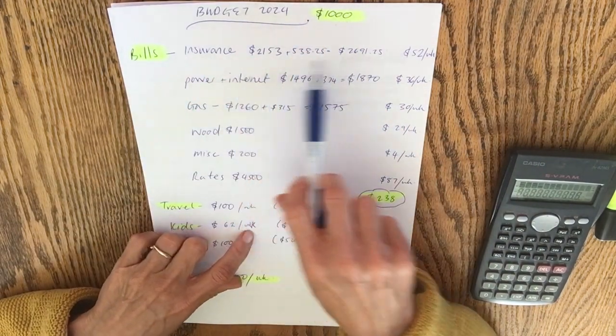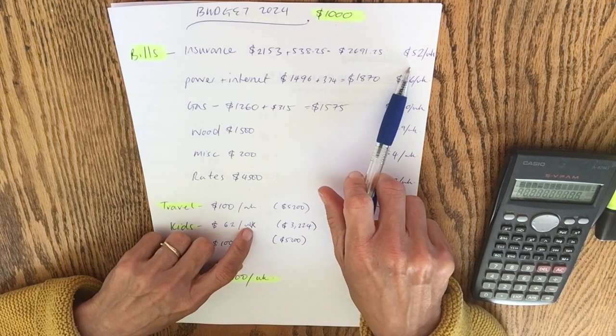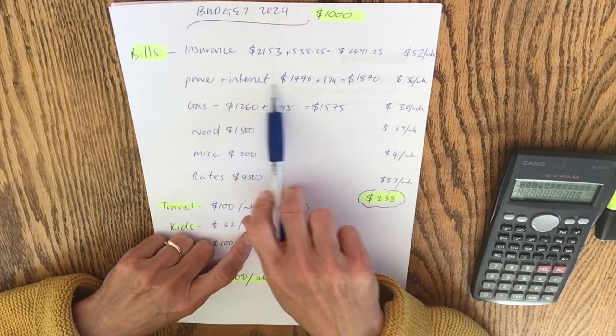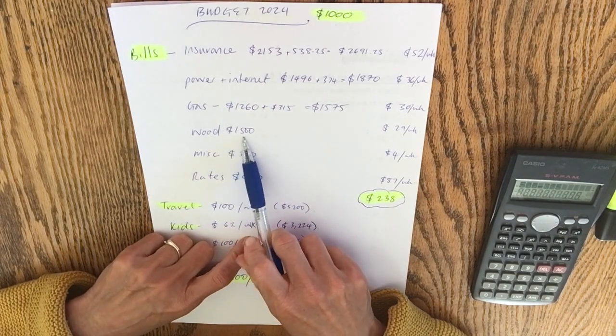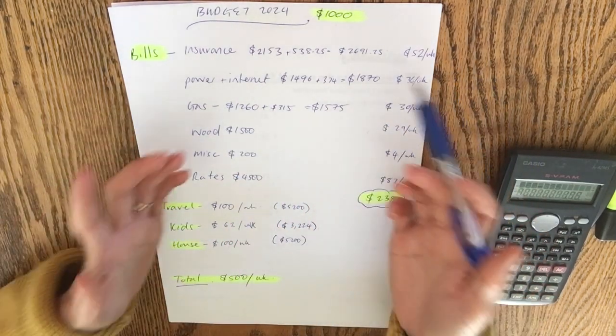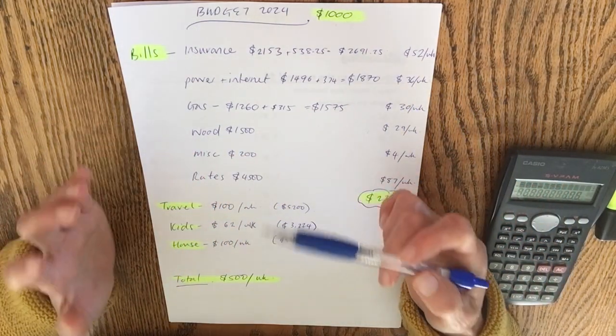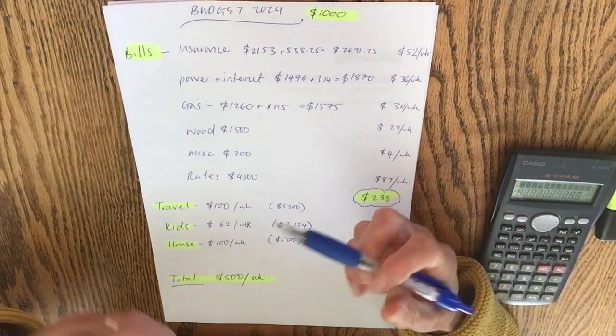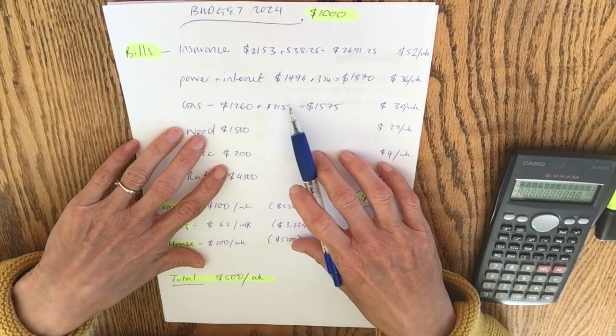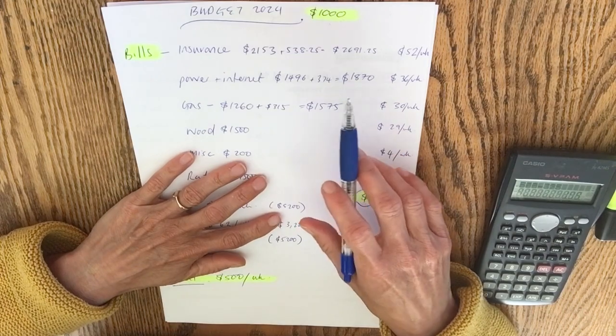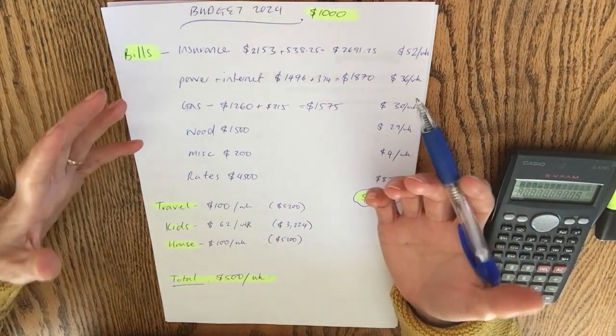So it's working for us and we're not left scrambling at the end of the week or the end of the month. We're not wondering where on earth did our money go. Why don't we have money for X, Y or Z. Because when we tell this money, this $1,000 where to go, we know we're always going to have enough in our insurance account to pay that bill. We know we're always going to have enough in the bank to pay the power and internet, gas, wood. We're never going to go cold because the money's there to pay for the product that we need. And that is what can set you free, my friends.